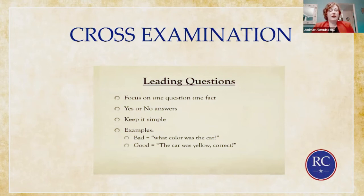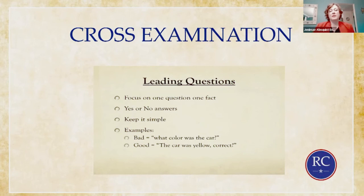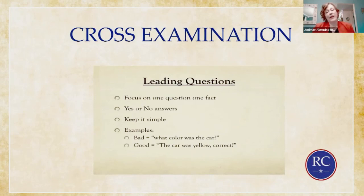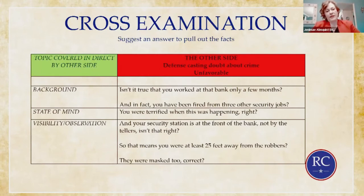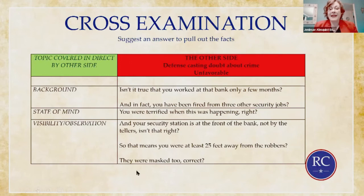When cross-examining the security guard or any witness, focus on leading questions. Put one fact in each question — keep it tight and concise. You want yes or no answers as much as possible. For example, a bad question is 'What color was the car?' — that's for your favorable witness. A good cross-examination question is 'The car was yellow, right?' A good cross-examiner might ask: 'Isn't it true that you only worked at the bank a few months?' 'And in fact, you have been fired from several other security jobs, haven't you?' This places doubt in the mind of the jury — it pokes holes in the wall you built.